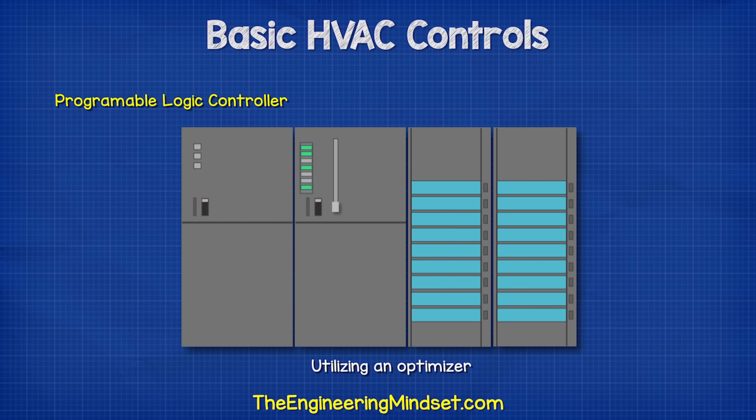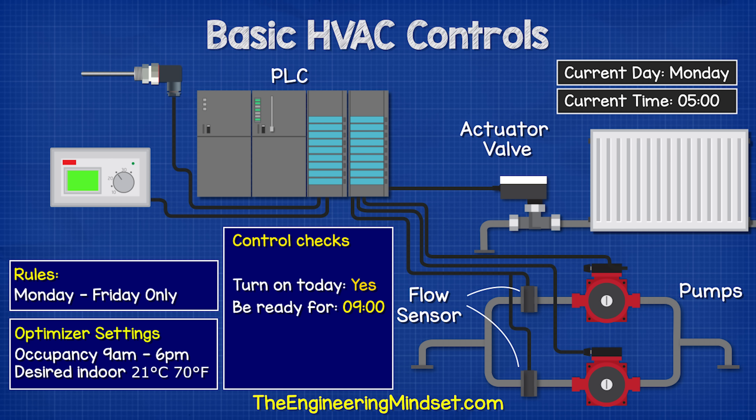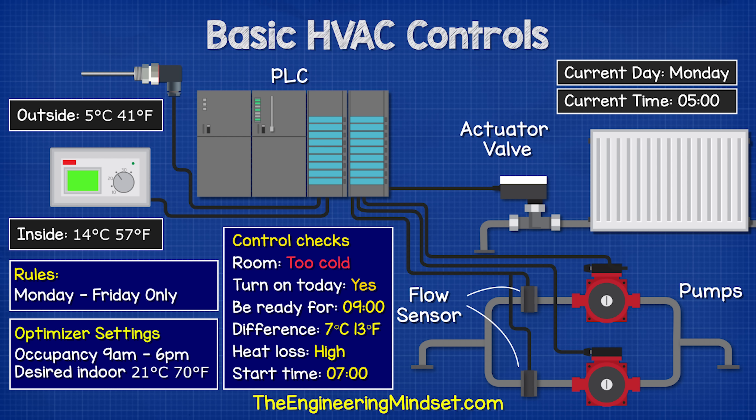A more sophisticated system, typically used in much larger buildings, will use an optimizer. For this example, we have it connected to a programmable logic controller. This will check with the clock: should the heating turn on today, and if so, at what time will the building be occupied? The clock replies yes — the scheduled occupancy time is 9 a.m. The PLC checks the current temperature of the room and calculates the difference between this and the desired temperature. It then checks the outdoor temperature to calculate how long it will take to heat the building, because on a cold day it will take longer, so it will need to start earlier.